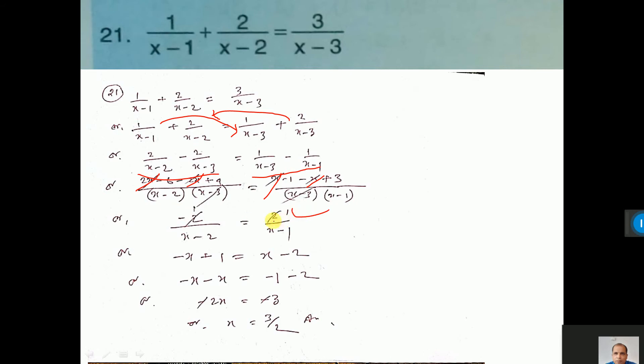Now do cross multiplication. Minus 1 into x, minus 1 into minus 1 that is plus 1. Again 1 into x that is x, 1 into minus 2 that is minus 2. Now bring x in the left hand side, it will be minus. Bring it in the right side, it will be minus. So here minus 2x equal to minus 3. Minus minus cut, x equal to 3 by 2.